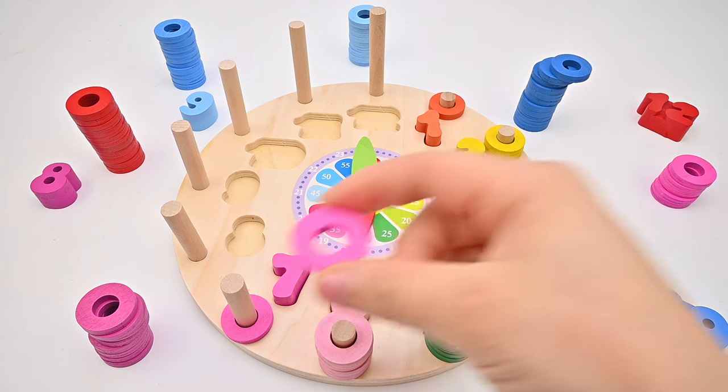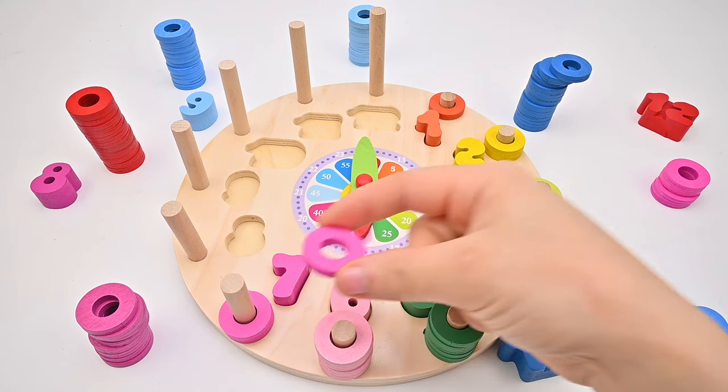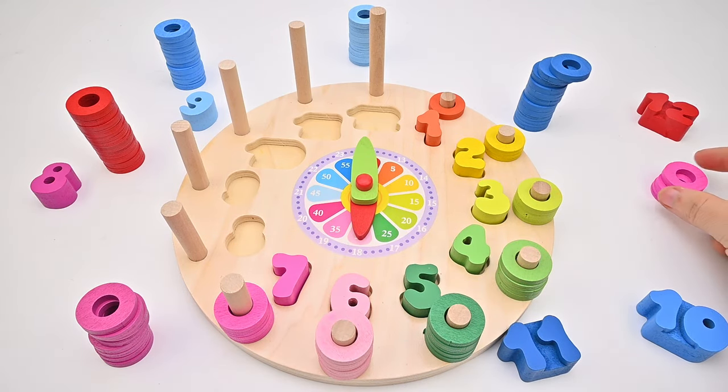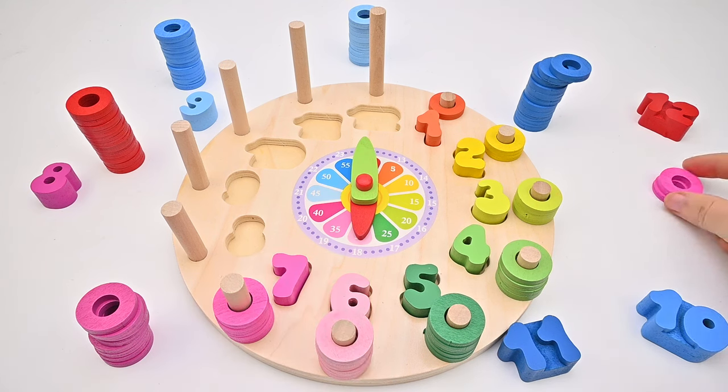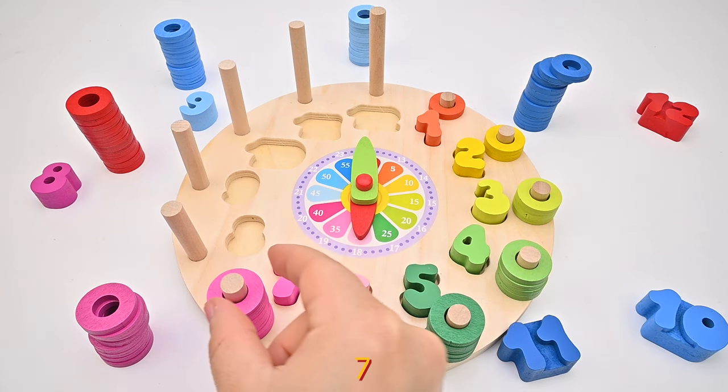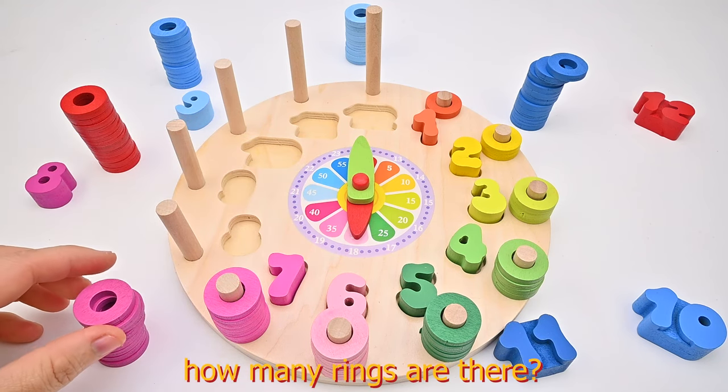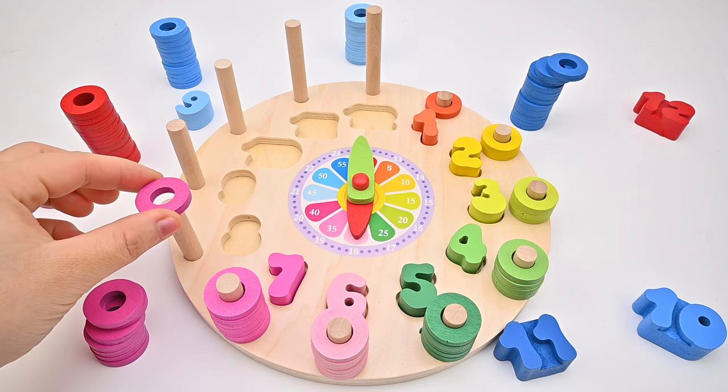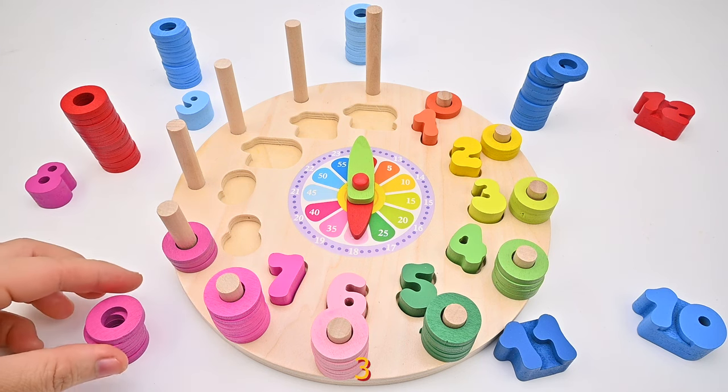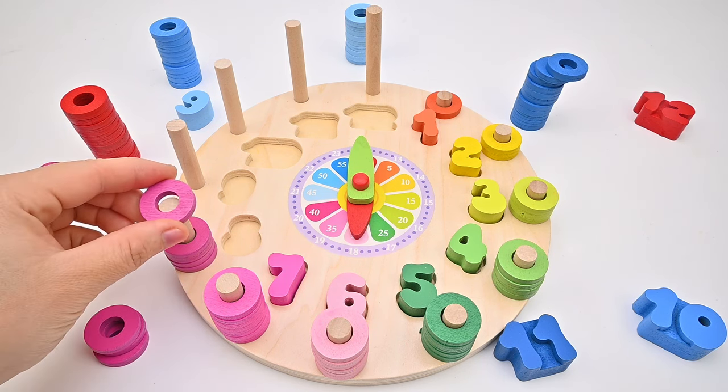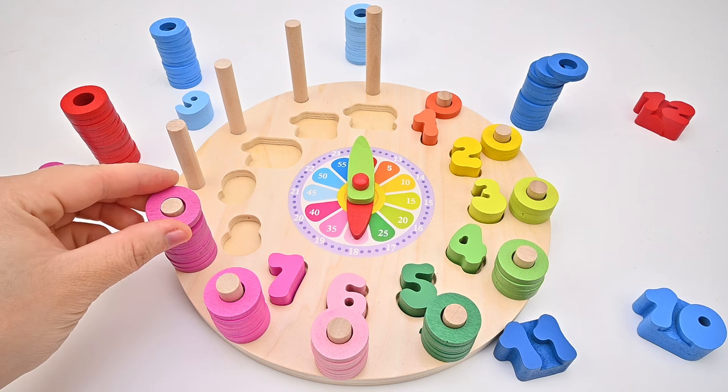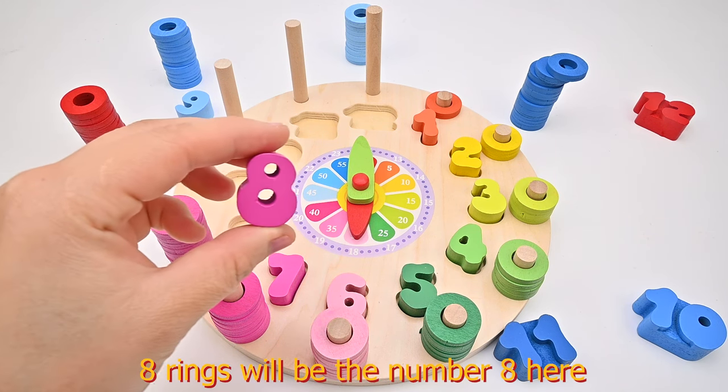Count how many rings are here. 1, 2, 3, 4, 5, 6, 7. Here is the number 40. How many rings are there? 1, 2, 3, 4, 5, 6, 7, 8. 8 rings will be the number 8 here.